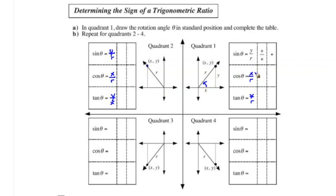Starting in quadrant one: the x-coordinate is positive and the y-coordinate is positive. So sine (y over r) is positive, cosine (x over r) is positive — r is always positive since it's the radius — and tangent (y over x) is also positive. All three primary trig ratios are positive in quadrant one.